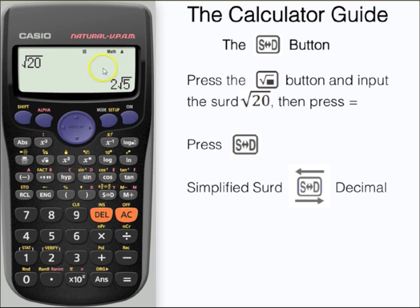2√5. And we can use the S⇔D button to change between that and a decimal approximation, and then back to 2√5.